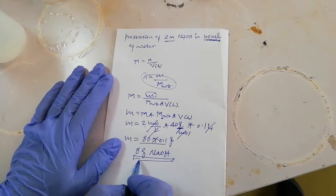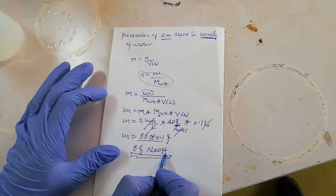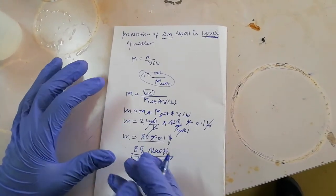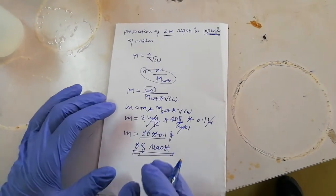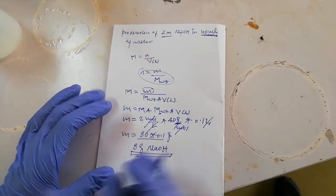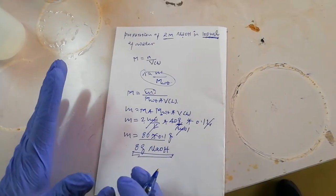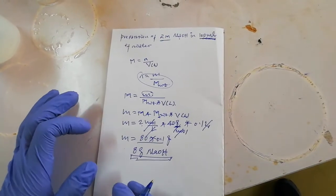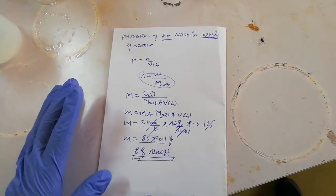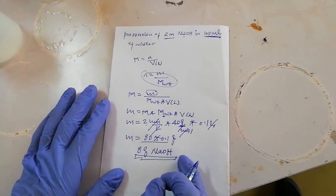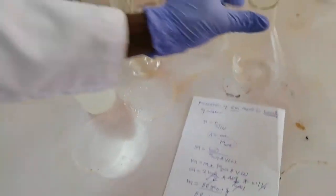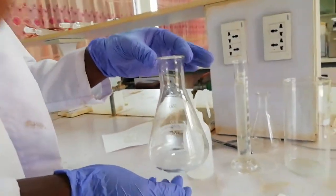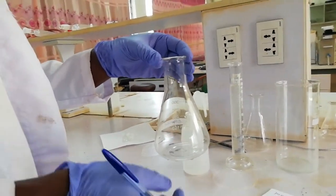Now we weigh 8 grams of sodium hydroxide on a digital balance, then transfer it into a beaker or conical flask, then add some amount of water and dissolve it. After that, we accurately measure 100 mL of water and add it into a beaker or conical flask. This conical flask, also called an Erlenmeyer flask, is used in a chemical laboratory to prepare solutions.